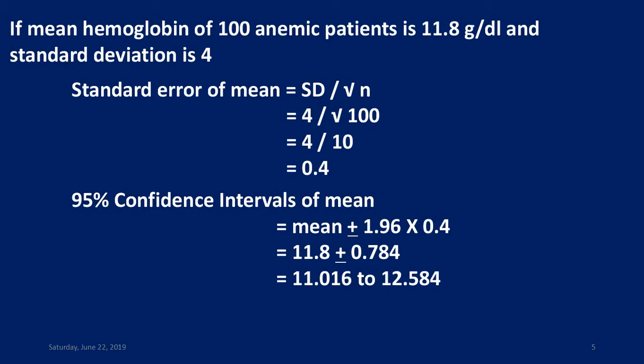Mean hemoglobin value of 100 anemic patients is 11.8 gram per deciliter and the standard deviation is 4. Standard error of mean is calculated by the formula standard deviation divided by square root of n, so 4 divided by square root of 100, that is 0.4. The 95% confidence interval of mean is equal to mean plus or minus 1.96 times standard error of mean, so we get the value 11.8 plus or minus 0.784.